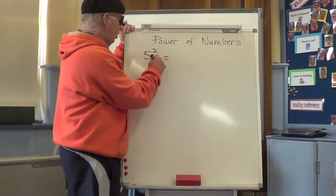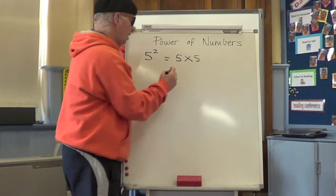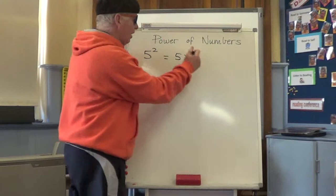So it's 5 times 5. A lot of children just go 5 times 2 is 10. Well, you won't get it right because it means 5 times 5 is 25.